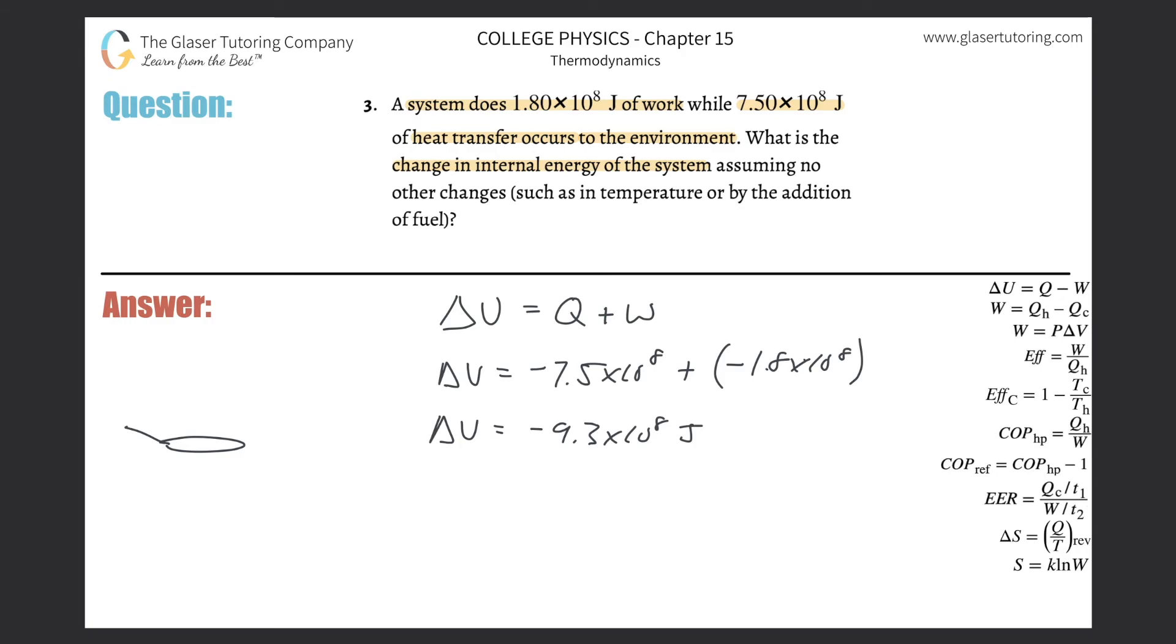And that is in terms of joules. That should hopefully make sense, that the total internal energy of the system, which we said is basically a summation of the change in heat and change in work, should be then a negative 9.3 times 10 to the 8. Why? Well, not only is the system losing heat energy, but it's also losing quote-unquote work energy because it's doing work on something else.